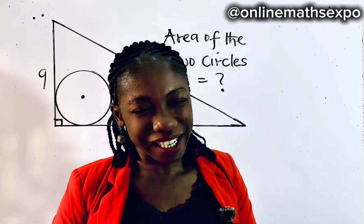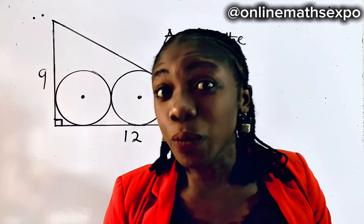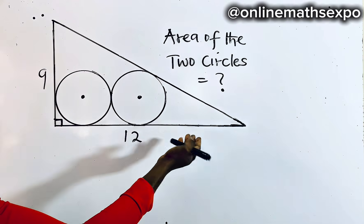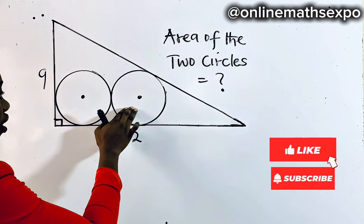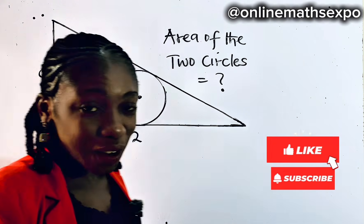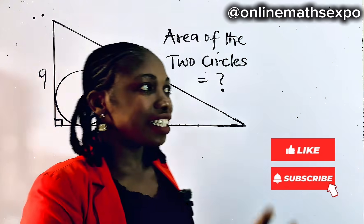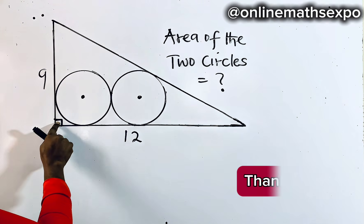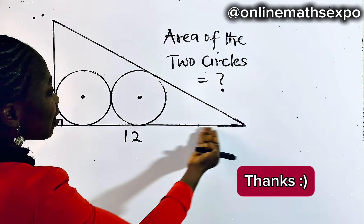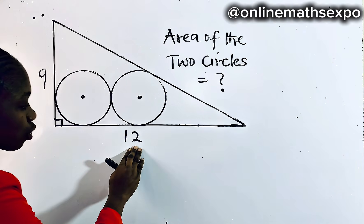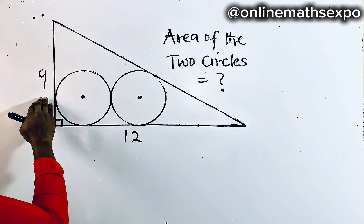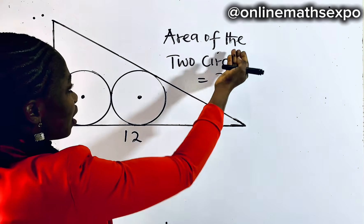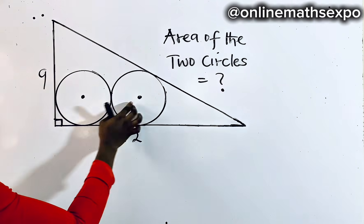Hello and welcome back to my channel. We have this beautiful geometry challenge on the board. We have two circles — these two circles are equal, we say they are congruent, and they are both inscribed in a right triangle. This side of the triangle measures 12 units, this side measures 9, and the question says: find the area of these two circles.